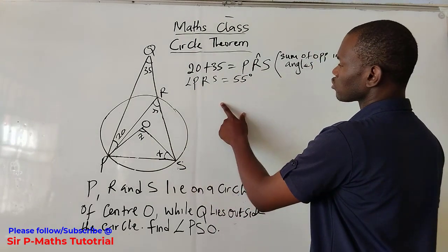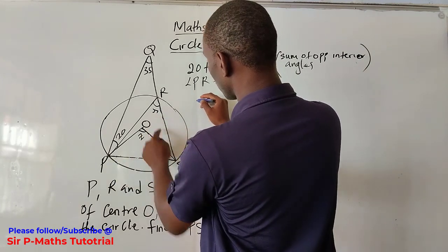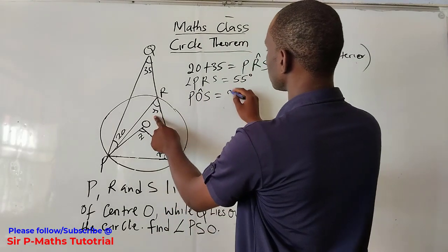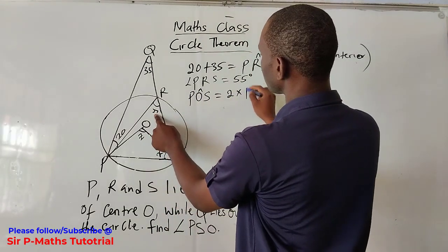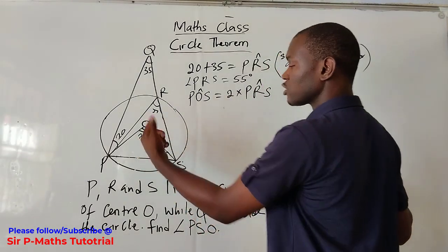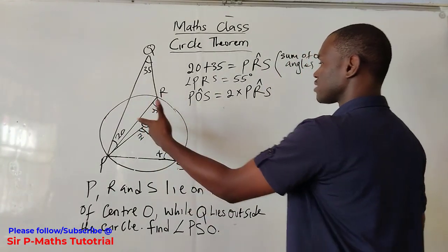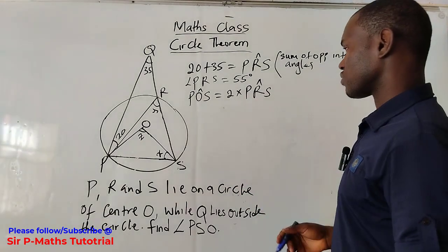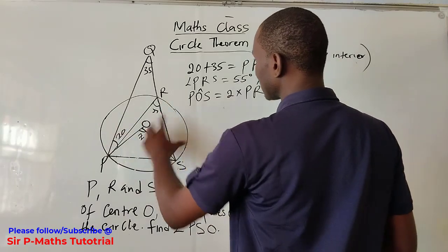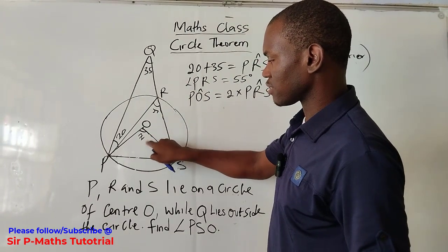Having gotten angle PRS, let us get angle POS — let me name it z. Angle POS is equal to two times angle PRS. The reason is: the angle at the center of a circle is twice the angle formed at the circumference. Whenever an angle is produced on the circumference of a circle, it must be half of the angle at the center.